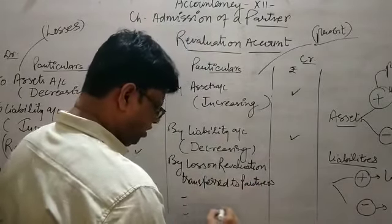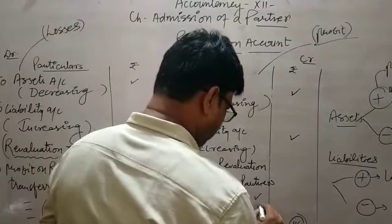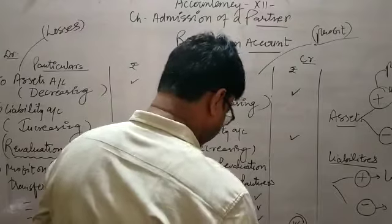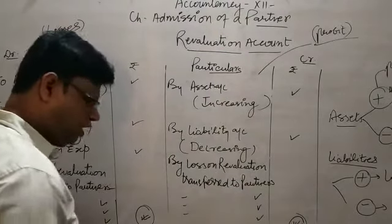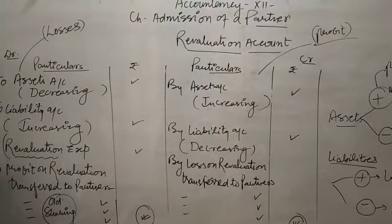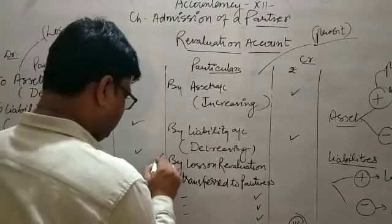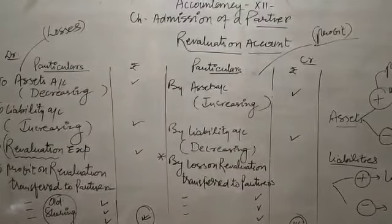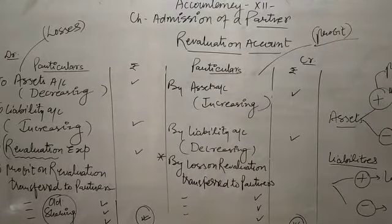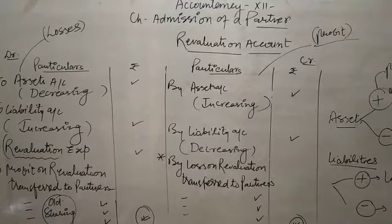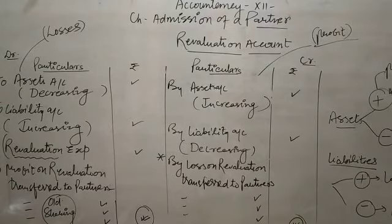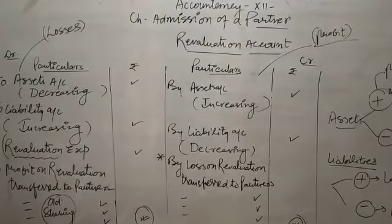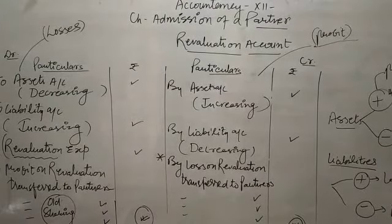This loss or profit will be distributed to all partners according to their share ratio. Capital or current accounts will be used. If there is no profit or loss, the totals will be the same. Either there will be a profit or there will be a loss — it is not possible that both profit and loss exist together in the same account.